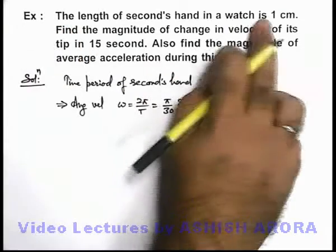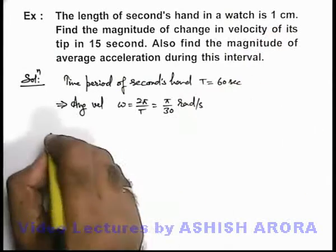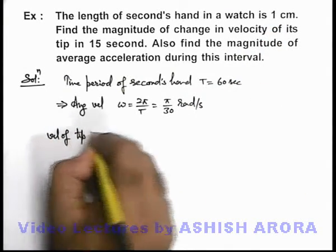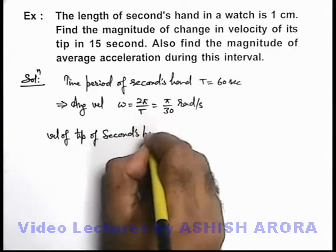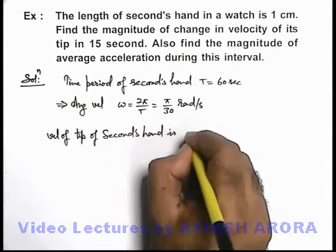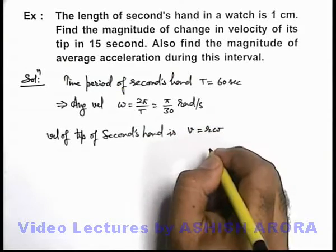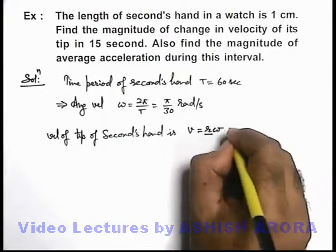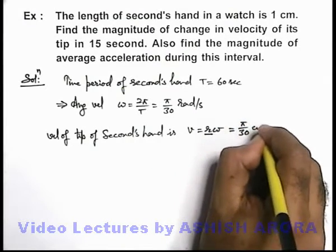We are given that length of the seconds hand is 1 centimeter. So we talk about velocity of tip of seconds hand. In case of revolution, speed can be written as r omega. The length of the second hand is 1 centimeter, so it can be written as 1 into π by 30, it is π by 30 centimeters per second.